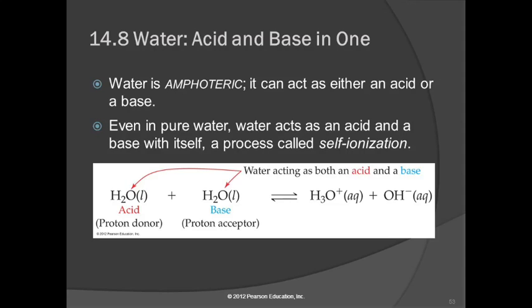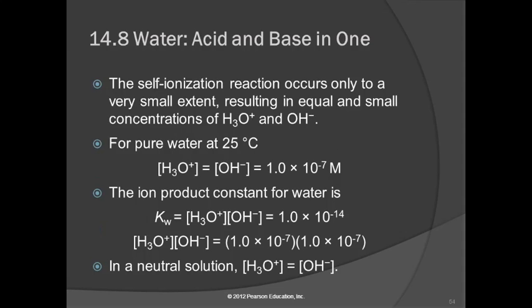This is something a bit unusual — we've got two things that are the same becoming different, which is kind of against nature. Usually we don't see two identical things becoming different. So this happens, but it happens to a very, very small amount. This is an equilibrium that occurs to a very small extent.